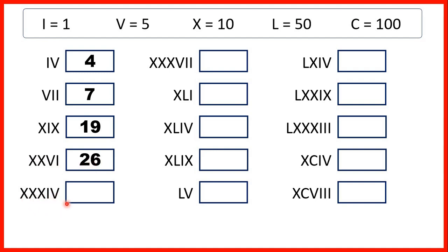XXXIV is 34, because 3 X's is 3 tens, so that's 30, and IV is 1 before 5, so that's 4. XXXVII is 37, because 3 X's is 3 tens, so 30, and VII is 5 and then 2 ones, which makes 7.